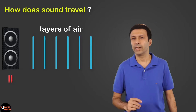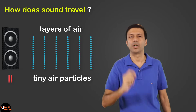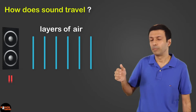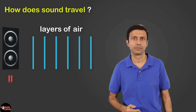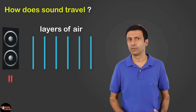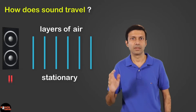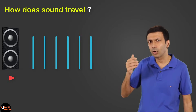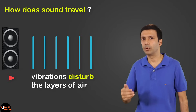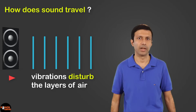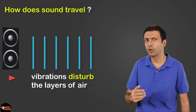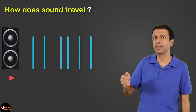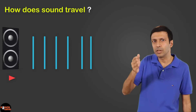To understand how sound travels, I've drawn the layers of air here. Each layer of air is made up of tiny air particles, so you can imagine this series of layers of air between the speaker and yourself. When the music is off, these layers are stationary — they are not moving. Now imagine the music is on, so vibrations are coming out of that speaker and these vibrations will go ahead and disturb the layers of air.